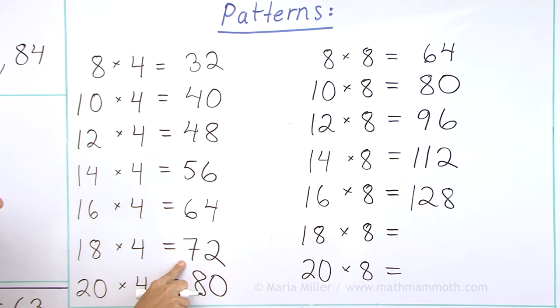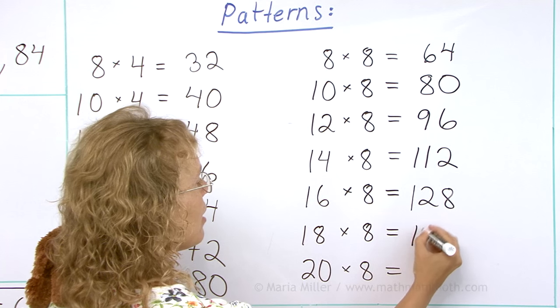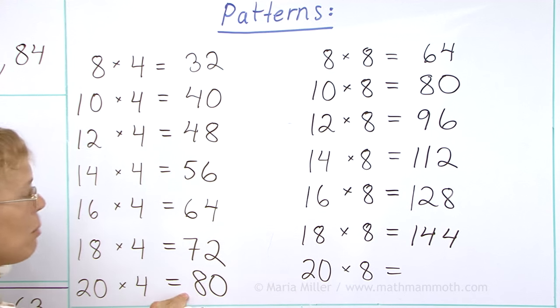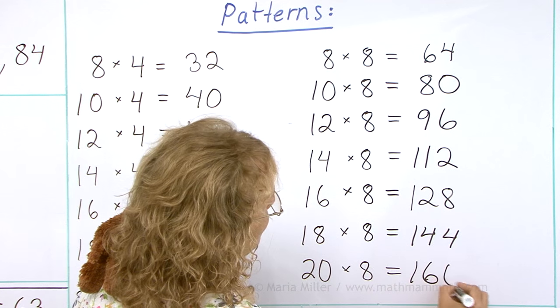And then seventy-two. Double seventy is one hundred and forty. And then four. And then double this one. One hundred and sixty.